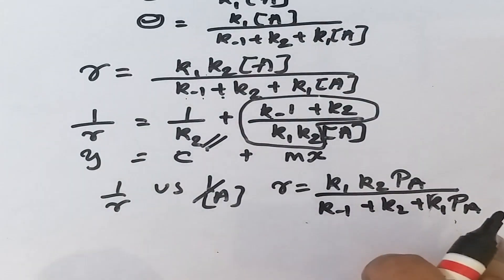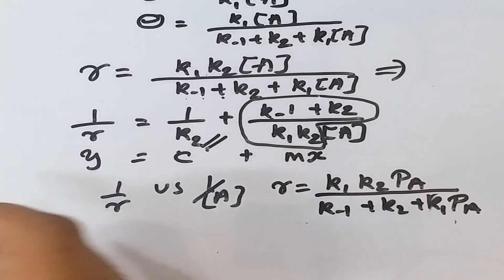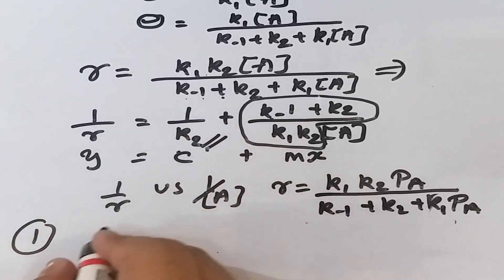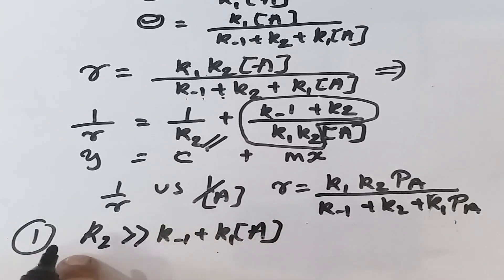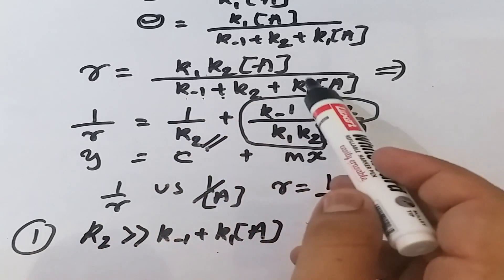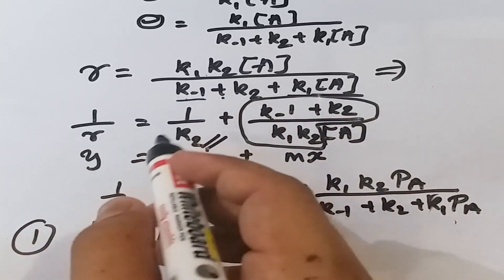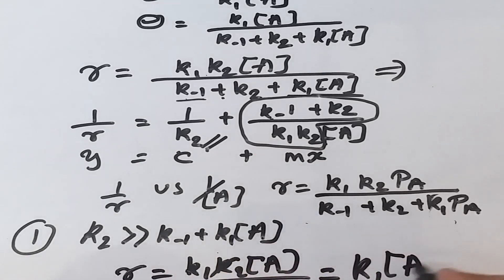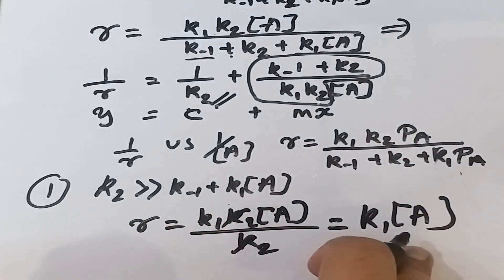The first limiting case is when k₂ is very large compared to both k₋₁ and k₁[A]. Under this condition, the terms k₋₁ and k₁[A] in the denominator can be neglected, giving r ≈ k₁k₂[A]/k₂ = k₁[A]. The rate is therefore first order with respect to the concentration of reactant A.